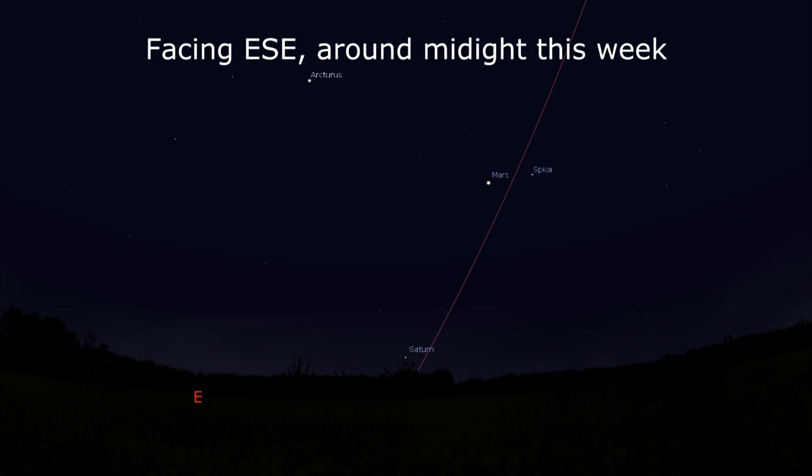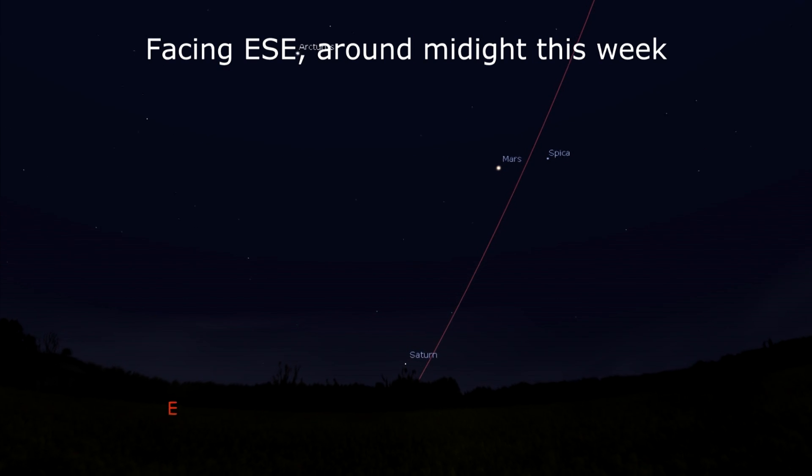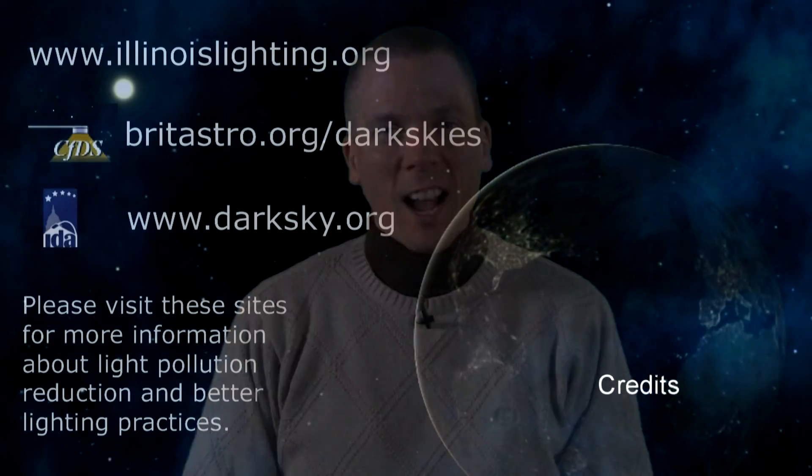Mars is well above 25 degrees elevation by midnight, and has settled in near Spica over the next several weeks. That's all for this week. Keep your eyes on the sky and your outdoor lights aimed down, so we can all see what's up. I'm David Fuller, wishing you clear and dark skies.